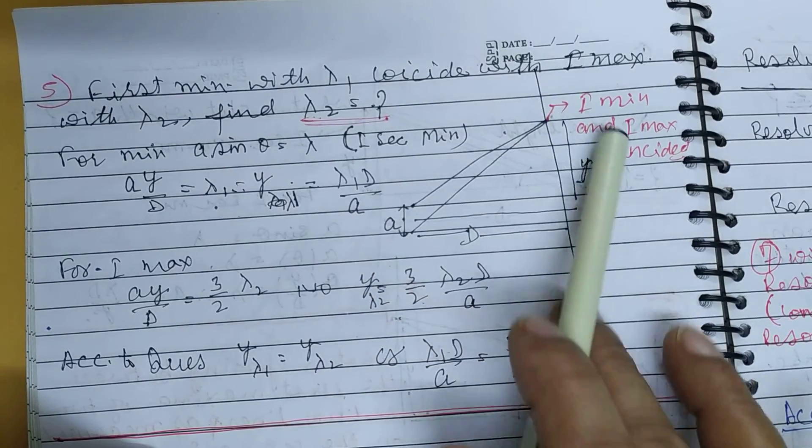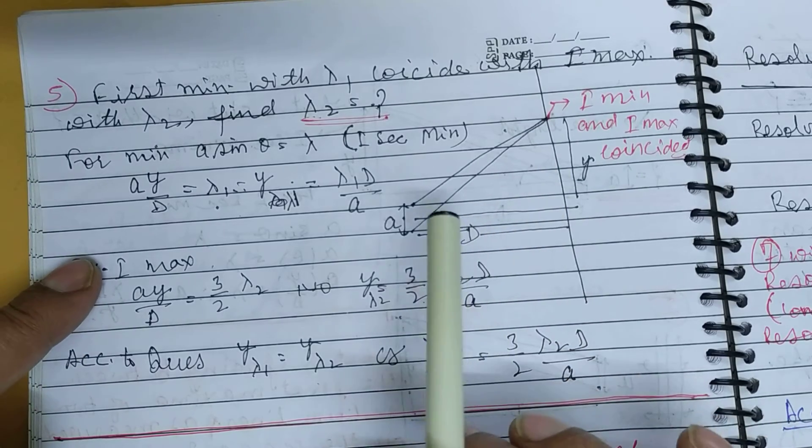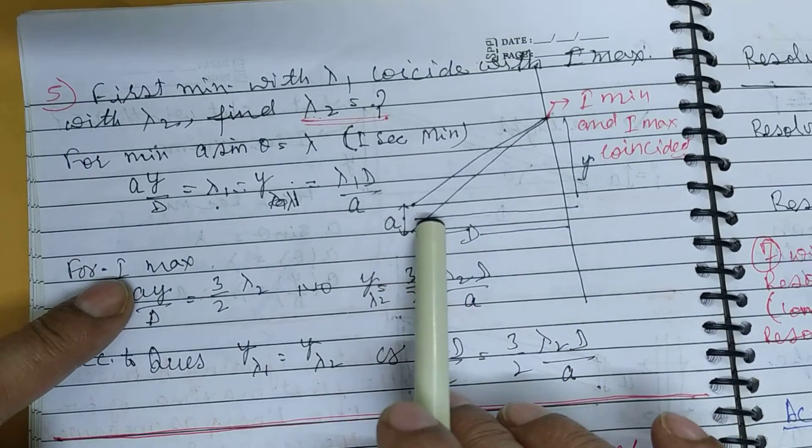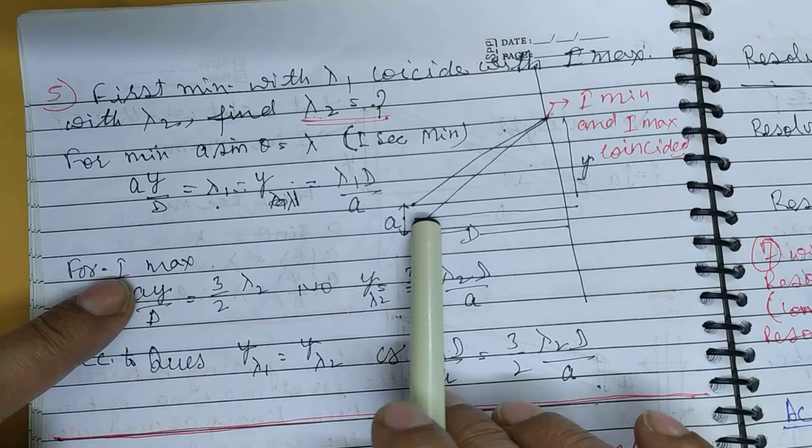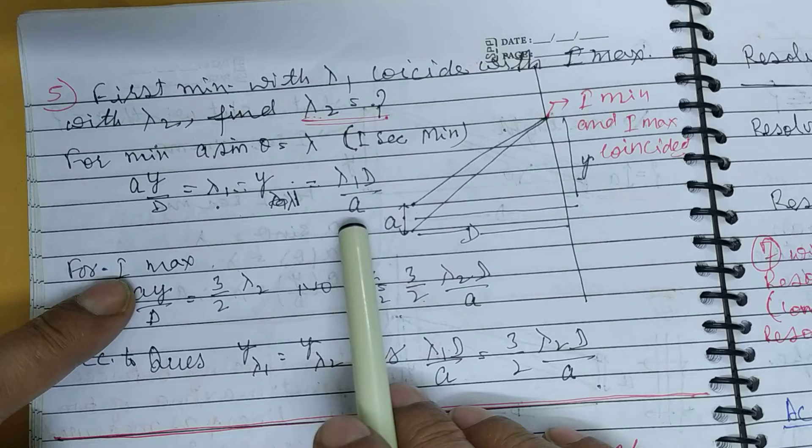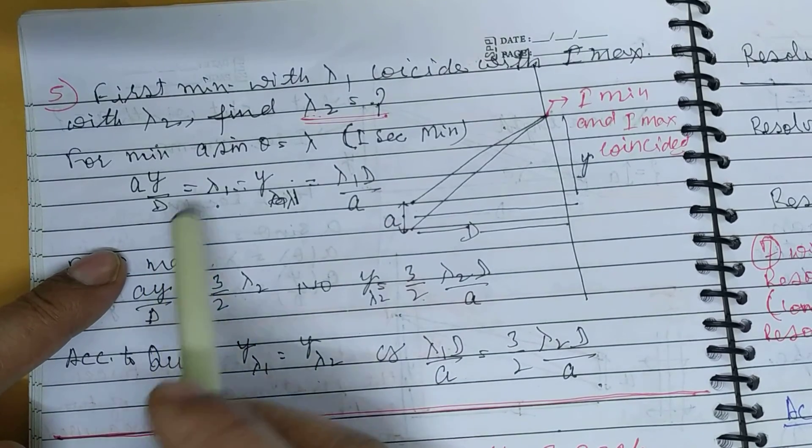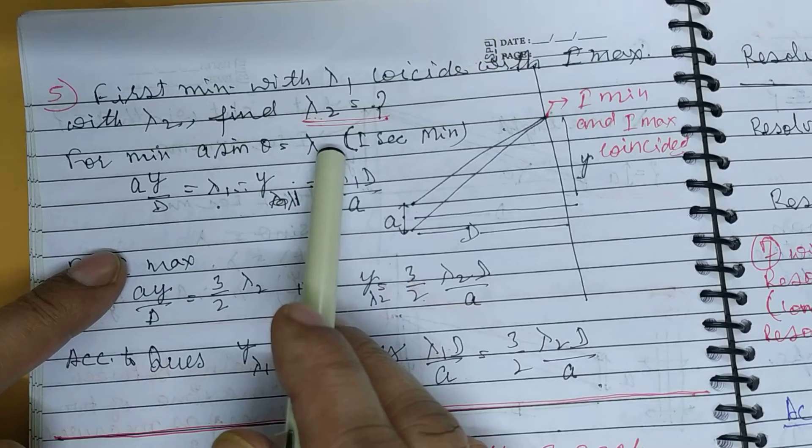The condition for first secondary minimum is: a sin theta equal lambda. And sin theta approximately equals y upon d, which equals lambda.